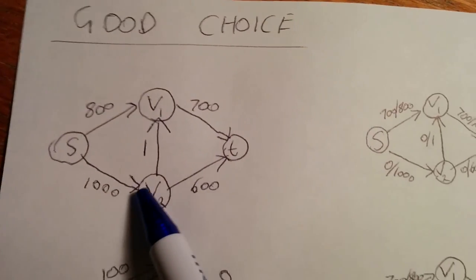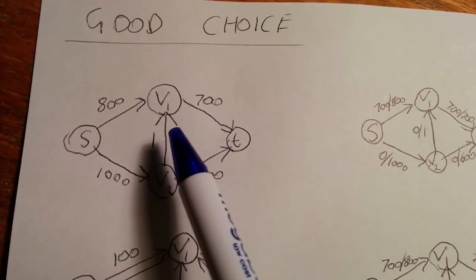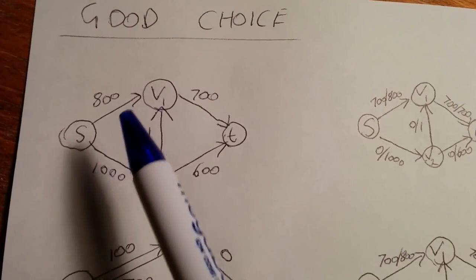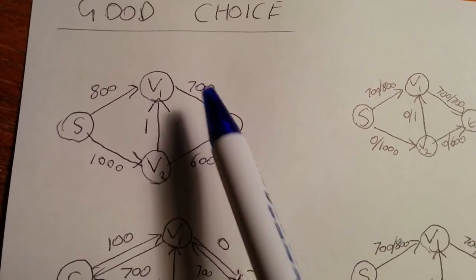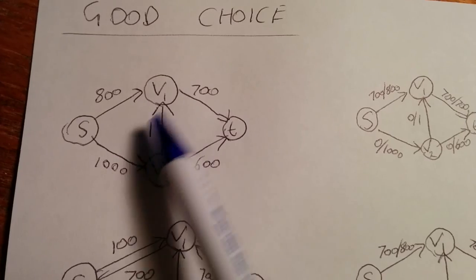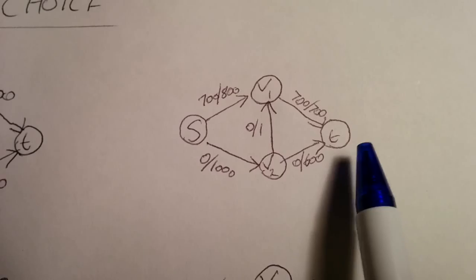So you can look at this and see that going along the edge from V2 to V1 is just going to slow us down and not help us at all. So we'll start off by going from S to V1 and V1 to T and pushing flow 700 across. So as you can see, I've made the residual network just as we did before in a previous example.